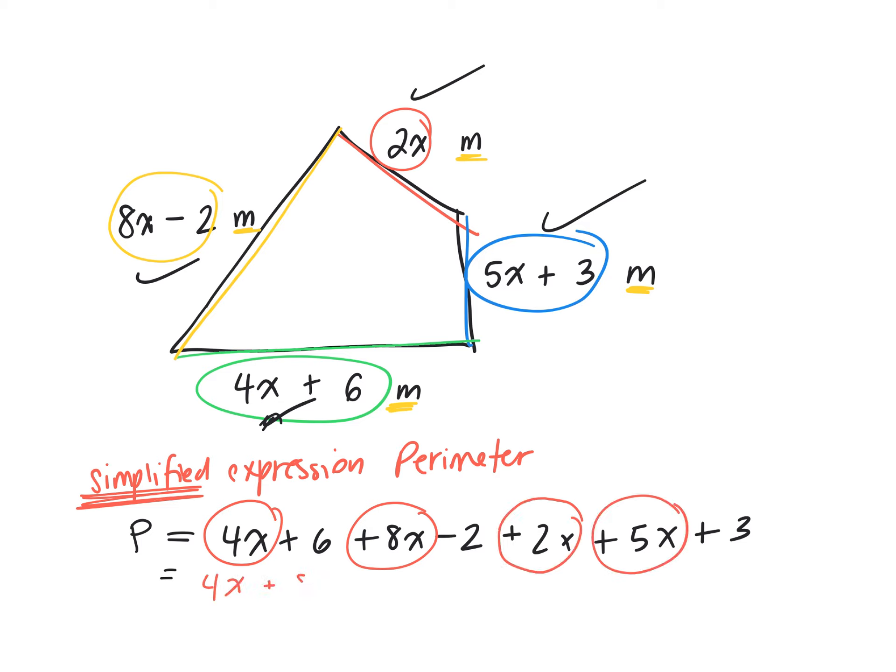So I have a 4x, plus an 8x, plus a 2x, plus a 5x. And then, do I have any other like terms? I have a plus 6. And then I have a minus 2, and then I have a plus 3.